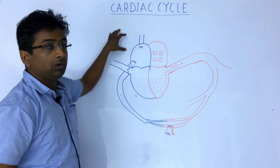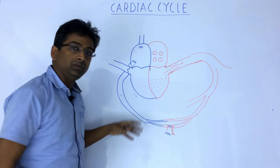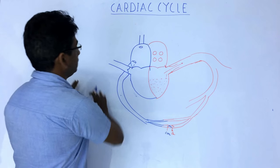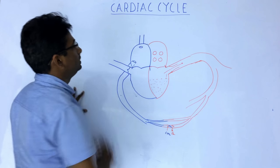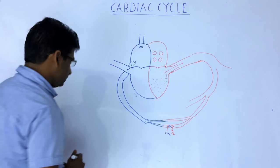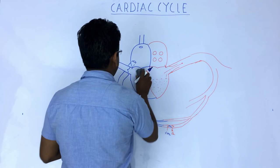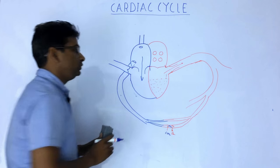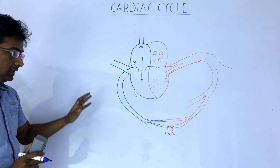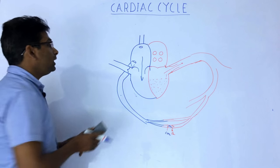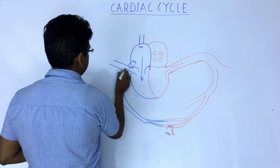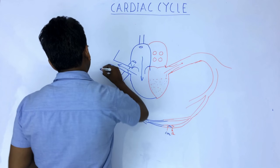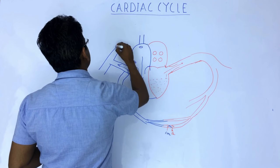Ultimately the veins drain into the right atria through the IVC and SVC. The SVC drains blood from the upper extremity and face, while the IVC drains from the lower extremity and abdomen. This deoxygenated blood comes to the right atria, then goes to the right ventricle. The ventricle contracts and blood goes into the pulmonary artery.